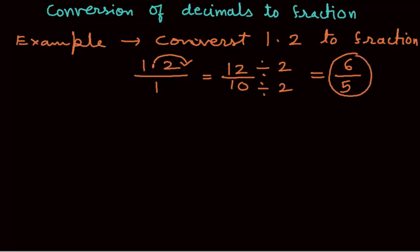Let me take another example: decimal 4.28. The first step is to write 1 in the bottom, or 1 in the denominator.